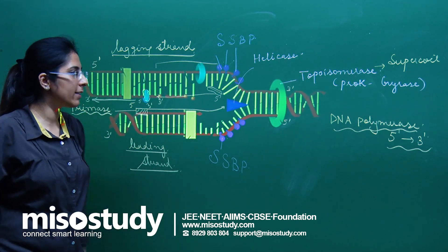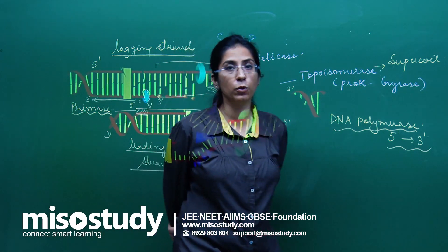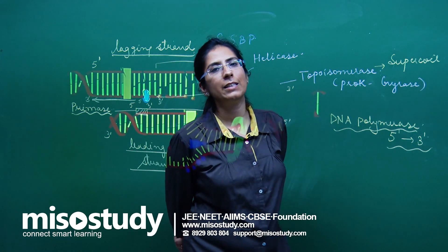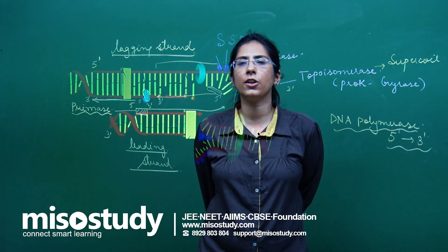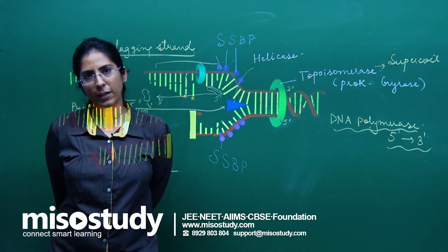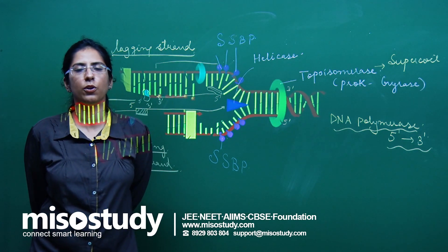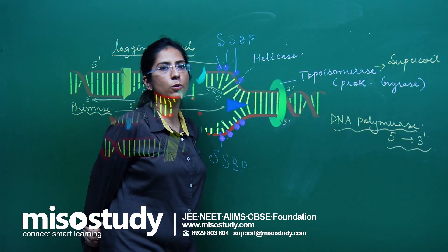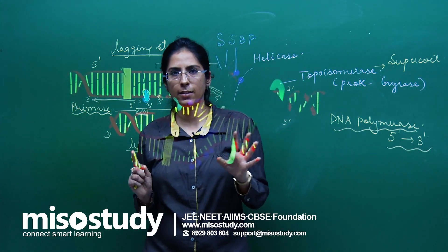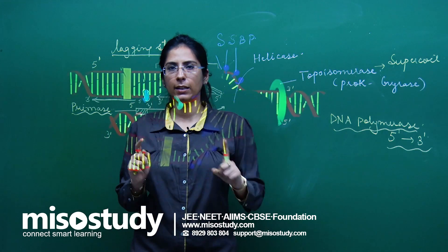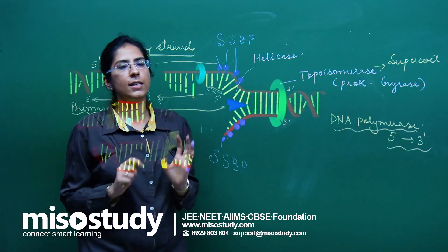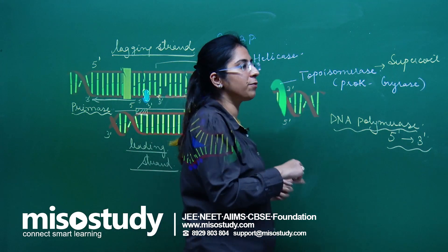Now, what kind of questions can be asked from this topic? For example: What is the direction of DNA synthesis? You have four options — 5′ to 3′, 3′ to 5′, both, or none. The answer is 5′ to 3′.